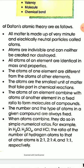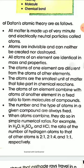The atoms of an element combine with the atoms of another element in a fixed ratio to form molecules of compounds. The number and type of atoms in a given compound are always fixed. When atoms combine, they do so in a simple numerical ratio.